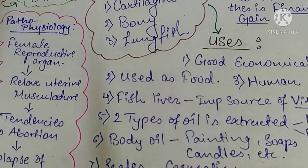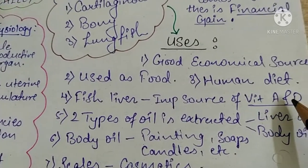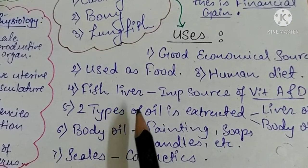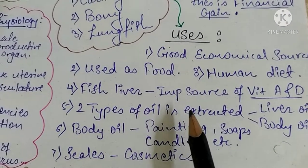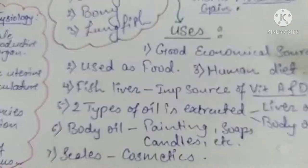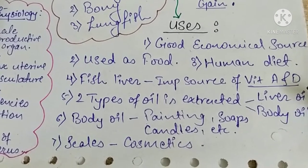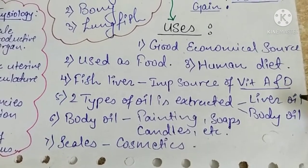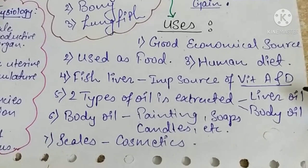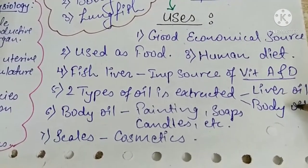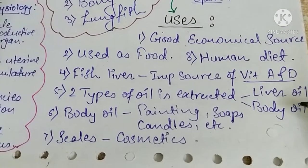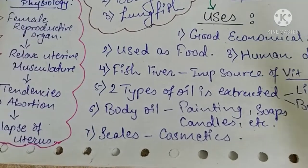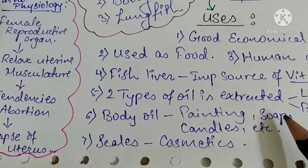Fish liver is an important source of Vitamin A and Vitamin D. There are two types of fish oils extracted: liver oil and body oil. From liver oil, mineral and vitamin supplements and medicines are prepared. From body oil, paints, soaps, and candles are prepared.